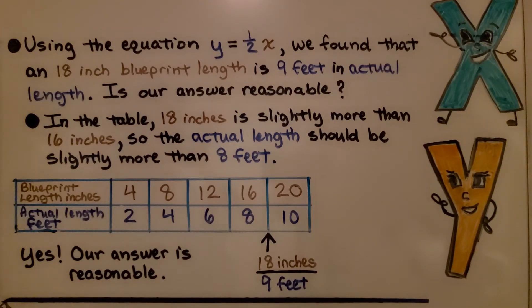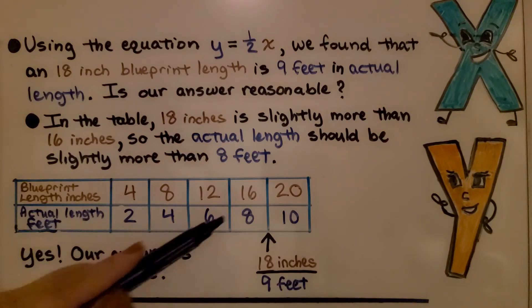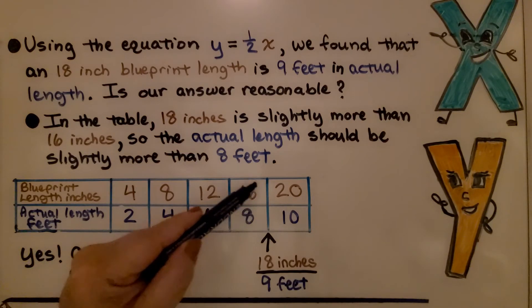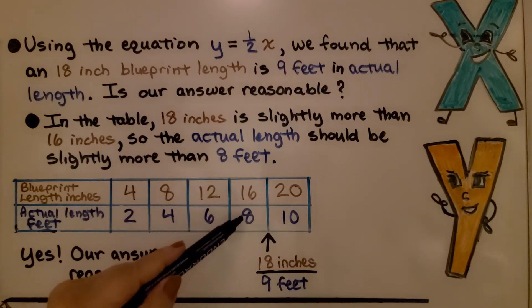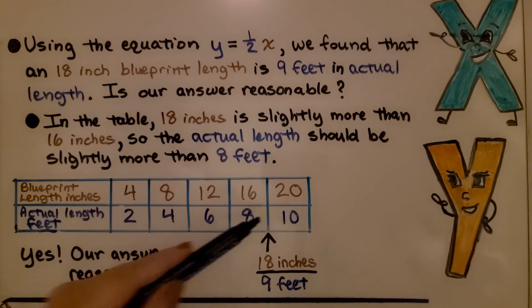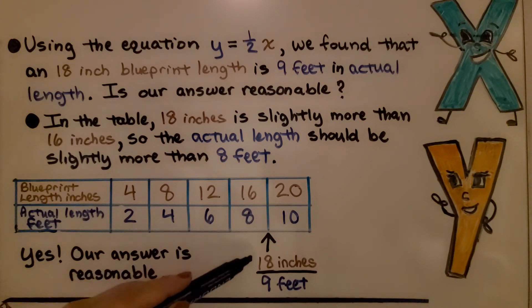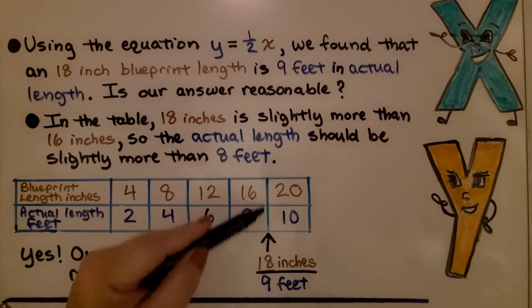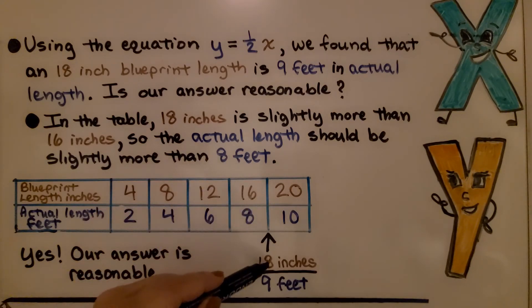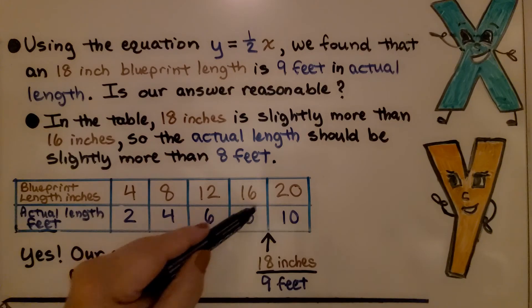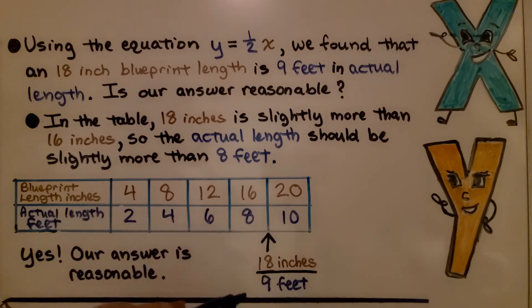Is our answer reasonable? Well, in the table, 18 inches is slightly more than 16 inches. So the actual length should be slightly more than 8 feet. We get 18 inches to 9 feet. That would go right in between here. There's a difference of 4 between 16 and 20. If we split that in half to get 18, then we would have to split the difference between 8 and 10 to get a 9. Yes, our answer is reasonable.